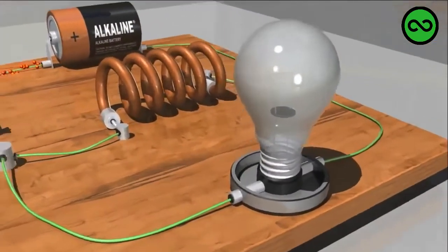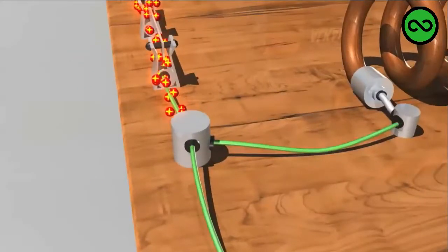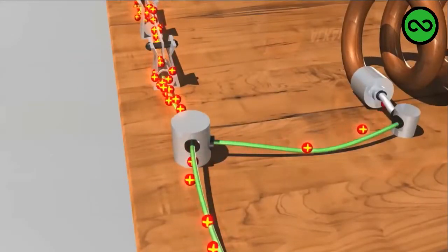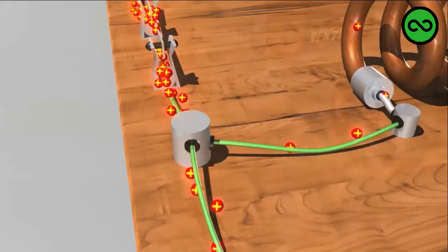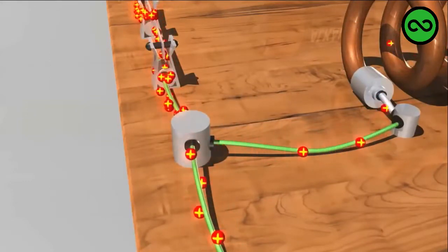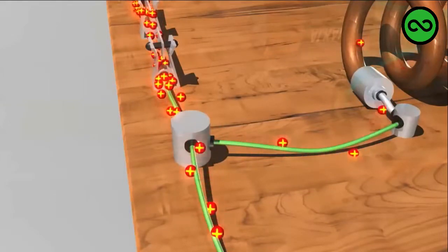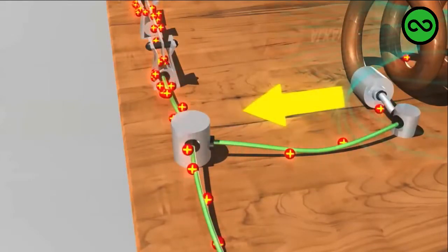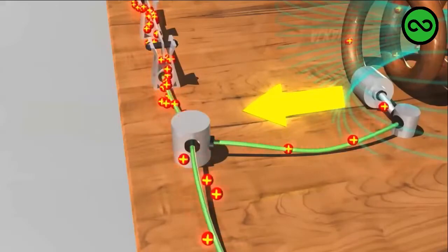At first, the current flows much more strongly towards the light bulb. This happens because as the magnetic field in the inductor grows, it induces its own voltage through Faraday's law. This is called electromagnetic induction.